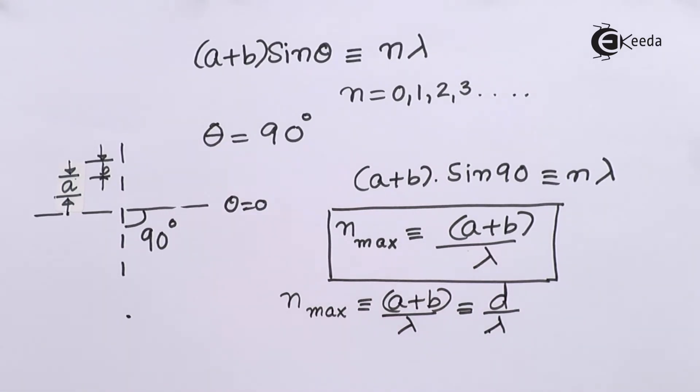Thus if you know the d for a particular grating and if you know the incident wavelength lambda, you will be able to find out what is the maximum order which is observable for that particular diffraction grating, which is simply the ratio of d upon lambda.